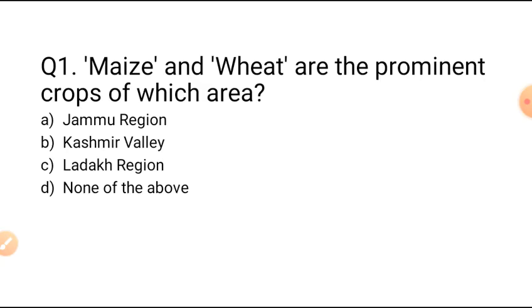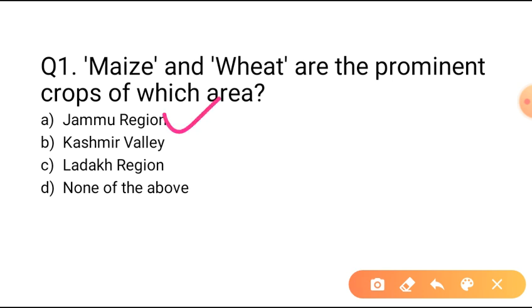Our first question is: Maize and Wheat are the prominent crops of which area? Option A: Jammu region. Option B: Kashmir Valley. Option C: Ladakh region. Option D: None of the above. Maize and Wheat are the prominent crops of Jammu region, so Option A is the correct answer.